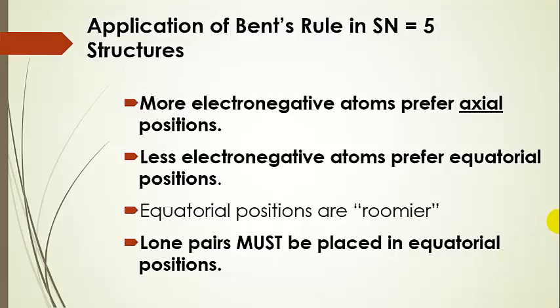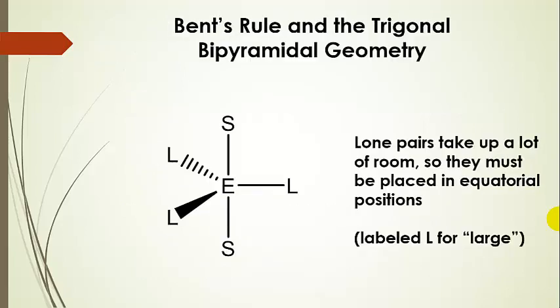Now we're going to apply a simplified version of Bent's rule for steric number 5. More electronegative atoms prefer axial positions — if possible, the more electronegative atoms are going to prefer an axial position. Less electronegative atoms prefer equatorial positions, basically because these equatorial positions are roomier. Lone pairs also need to be placed in equatorial positions — remember they have sharp elbows and need plenty of room, so they must go in equatorial positions.